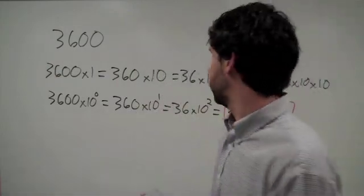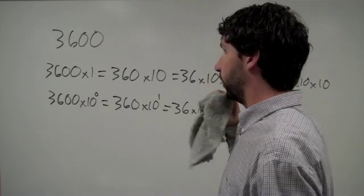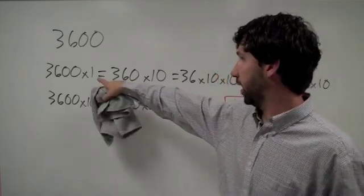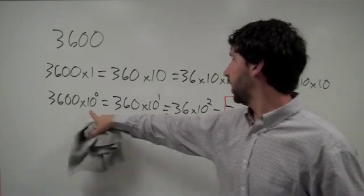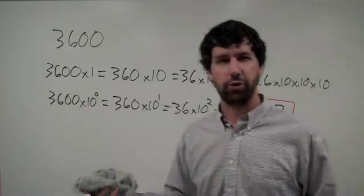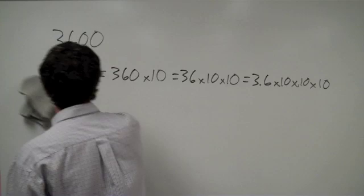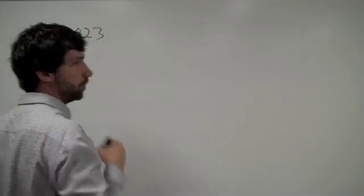Now what we're going to do is do the same thing for a really small number. Note the progression here. We went and wrote out our powers of 10, our multiples of 10 rather, and we rewrote them as powers of 10. I'm going to show you a shortcut to that later. So, let's try a smaller number. Something like .0023.